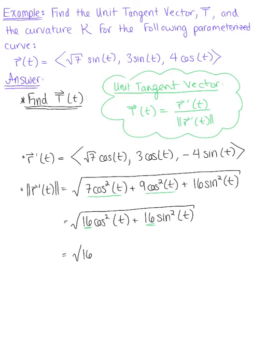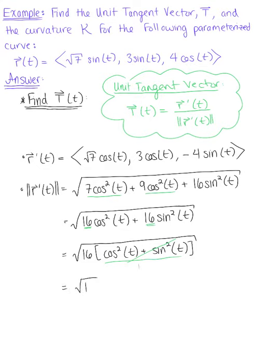We have the square root of 16 multiplied by cosine squared of t plus sine squared of t. We notice Pythagorean's identity, so that expression simplifies to 1, and we have the square root of 16, which leaves us with 4.